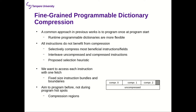Our proposal is to use code compression to improve energy efficiency in embedded systems using runtime programmable parallel dictionaries. A common approach in previous works is to program the dictionaries once at program start. Runtime programmable dictionaries are more flexible — you can change the contents as needed and they may allow better compression ratios. It should be noted that not all instructions benefit from compression; for example, instructions executed only once would only incur additional overheads. In our approach, we selectively compress the most beneficial instructions or their subfields. To select the most beneficial instructions, we propose a selection heuristic.